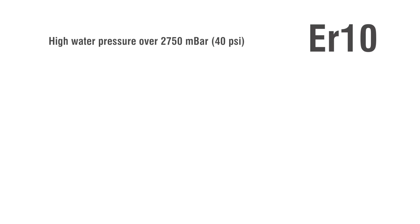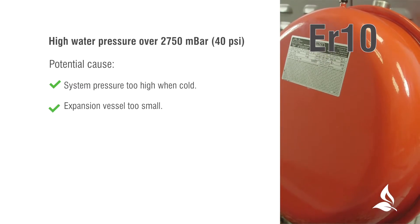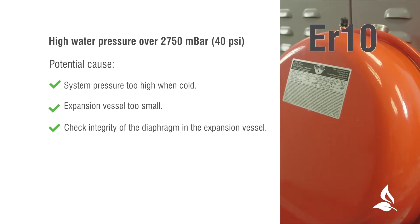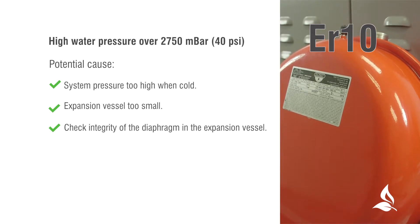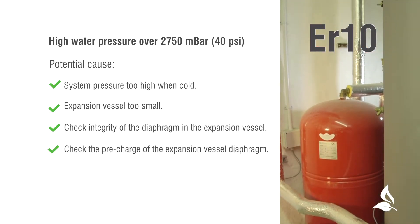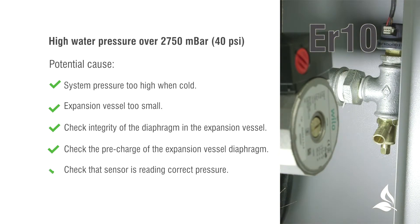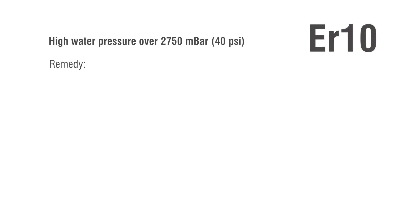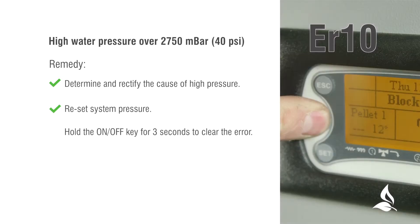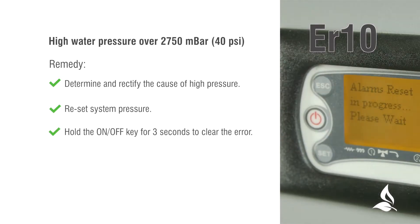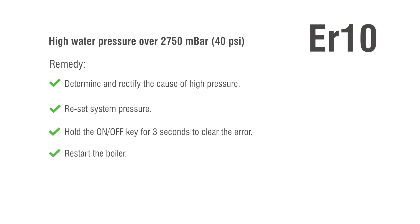ER10: High water pressure over 2750 millibar (40 PSI). Potential causes: system pressure too high when cold; expansion vessel too small; check integrity of the diaphragm in the expansion vessel; check the pre-charge of the expansion vessel diaphragm; check that the sensor is reading correct pressure. Remedy: determine and rectify the cause of high pressure, reset system pressure. Hold the on-off key for 3 seconds to clear the error, then restart the boiler.